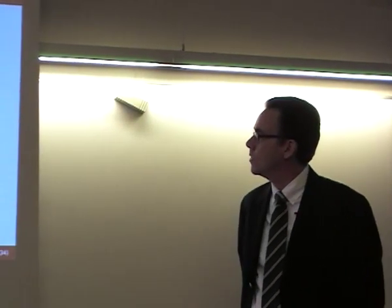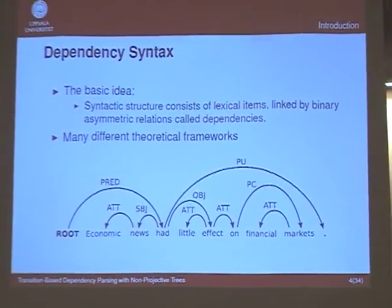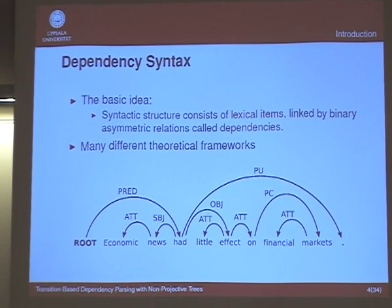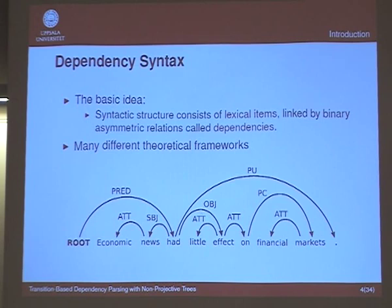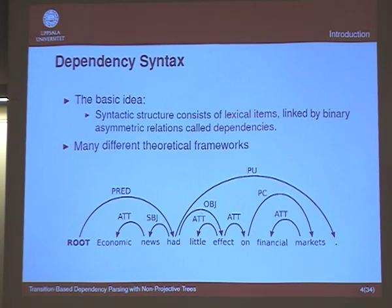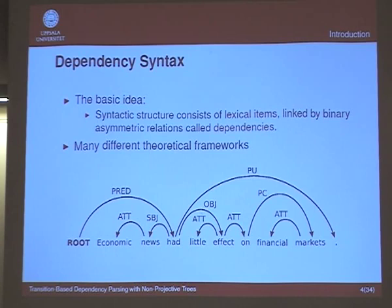Before going on, I want to introduce the second part of the talk. The basic idea in dependency syntax is that syntactic structure essentially consists of binary asymmetric relations between lexical items, which we call dependencies. This idea has been developed in different theories and frameworks, but in most of them it is assumed that this network of dependencies forms a tree structure, with actual labels on arcs varying across frameworks.